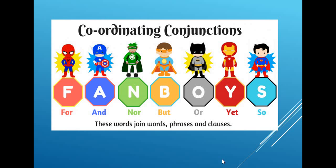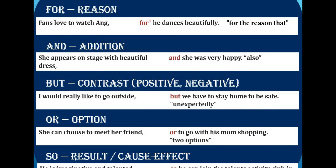Let's start with FOR. FOR is used to show a reason — it is the same as the word BECAUSE. Example: 'Fans love to watch Aang, for he dances beautifully.' The fans love to watch Aang; why do they love to watch him? FOR he dances beautifully. FOR as a conjunction took the place of BECAUSE. It comes in sentences to join them together and show a reason.